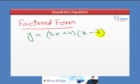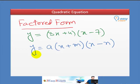So, this is called factor form because it is factorized. If you want to write in a general form of factorization, y equals a times x plus m and x minus n. So, this is called a factorized form or a factor form.